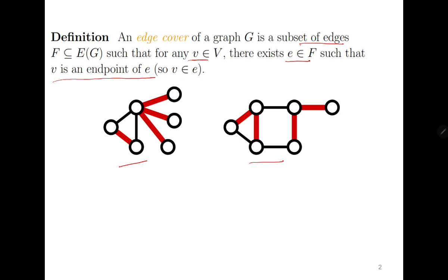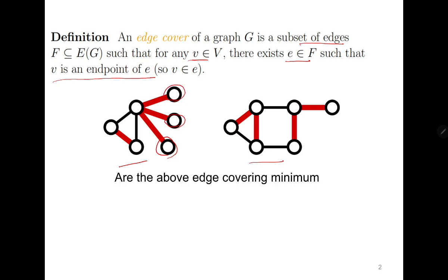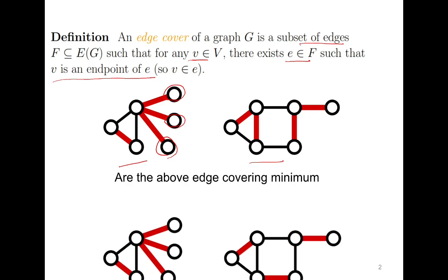The next question is, do you think that the following edge cover is minimum? Please try by yourself. You will observe that in the first graph, there is no other possibility because these three vertices have degree one. So to cover them, we need three edges. And then for this triangle, one edge is already covered, so we need one more edge. But in the other graph, there is a possibility, and this is how we can cover all the vertices using only three edges.